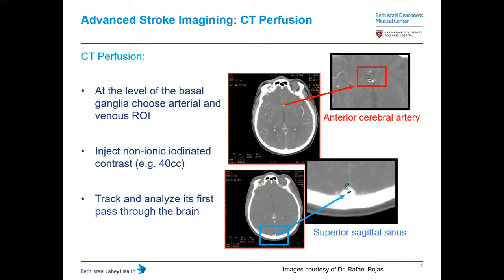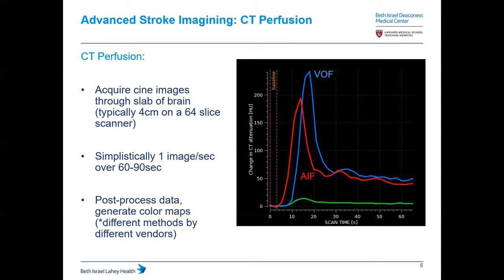RAPID is now the predominant automated CT perfusion software used in many major centers for triaging of acute stroke management in terms of mechanical thrombectomy. Here is a brief overview of the CT perfusion technique as it was classically done. At the level of the basal ganglia, you choose an arterial and venous region of interest for arterial inflow and outflow. You inject non-iodinated contrast, roughly 40 cc, and track its first pass through the brain, typically picking the ACA and the superior sagittal sinus for venous outflow.